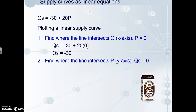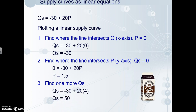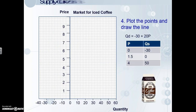They don't actually supply a negative 30, but it's an indication of how unwilling they are to supply. Secondly, we find where the line intersects the y-axis — this is where quantity supplied equals zero. We plug that in, and some simple rearranging gets us to a price of $1.50. Good practice to find one more point: at price equals four, we work out that Farmers Union will supply 50 iced coffees. The last step is to plot the points and draw the line: price zero, quantity negative 30; price 1.5, quantity zero; price four, quantity 50. Then we add our line and we are done.